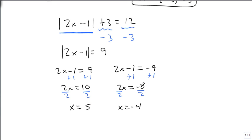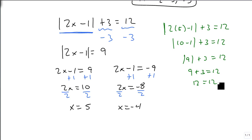Now it's worth going back and checking, especially on these types of problems. Is |2(5) - 1| + 3 = 12? So 2 times 5 is 10. 10 minus 1 is 9. The absolute value of 9 is 9, and sure enough, 9 plus 3 is 12.